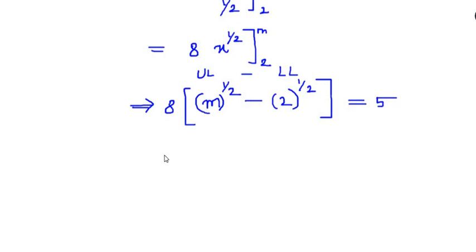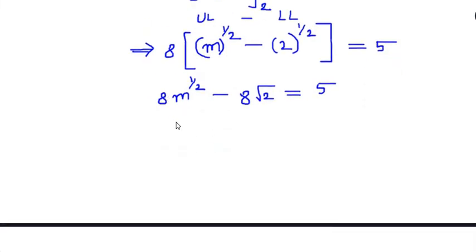Let us just open up the brackets. It becomes 8 m to the power of half minus 8 gets multiplied with 2 to the power of half, so it becomes 8 root 2, because 2 to the power of half is square root of 2, equals 5. Finally we have it as 8 m to the power of half equals 5 plus 8 root 2.